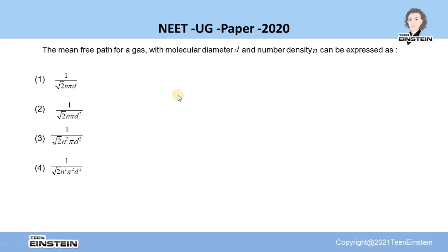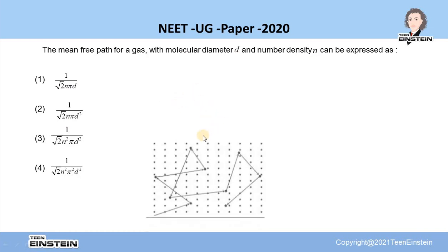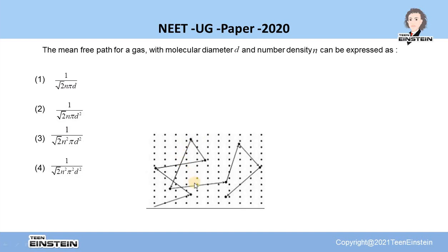Before you solve the problem, let us understand what is mean free path. In any gas there are gas molecules which will randomly move around and during the motion they will collide with each other randomly.